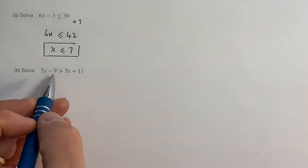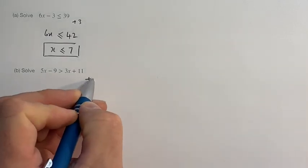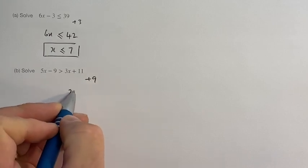We take the nine across to the side as a plus nine. So you can see on that side we have 20.